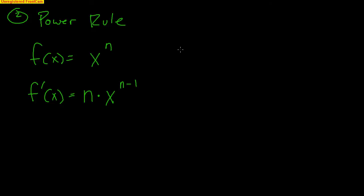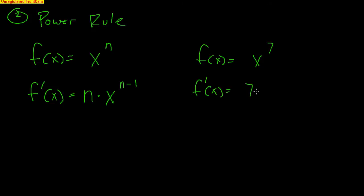Here's an example. If we have a function like x to the seventh, then the derivative of x to the seventh is going to be 7x to the sixth. The 7 falls down in front, and the new exponent is 7 minus 1, which is 6. Very simple.